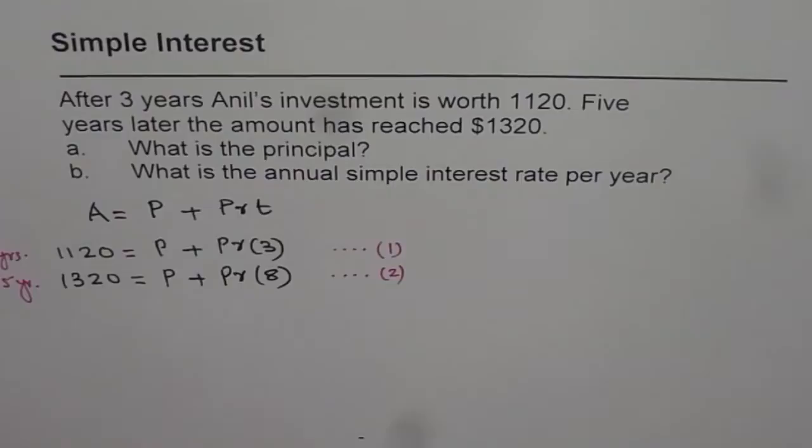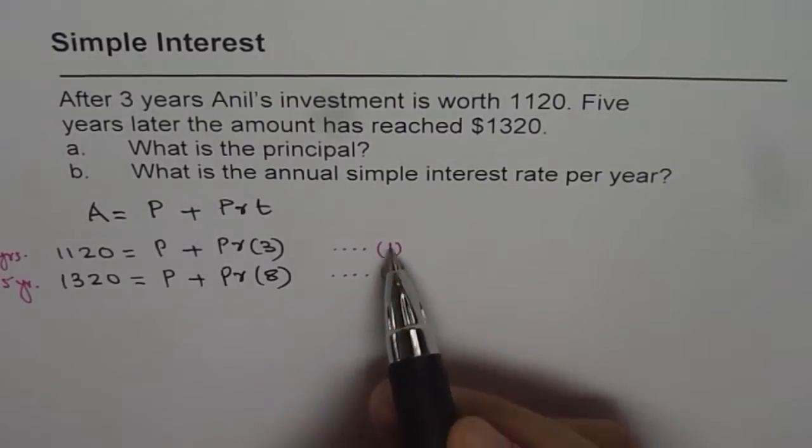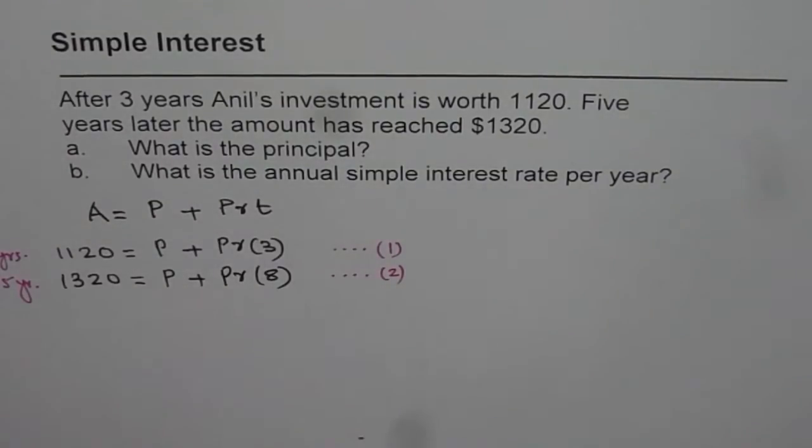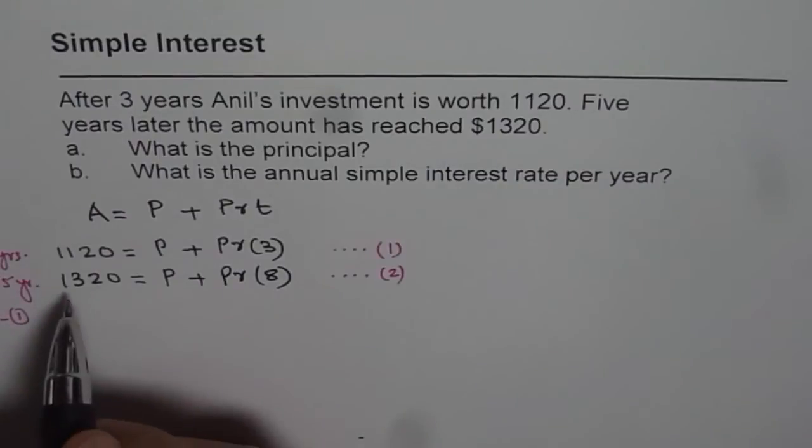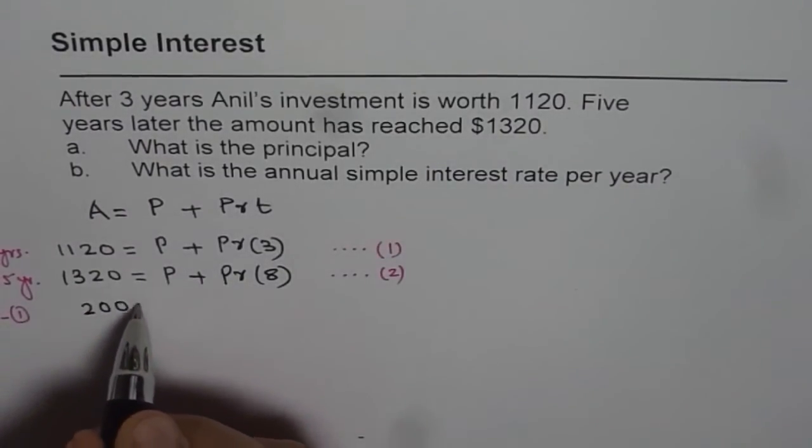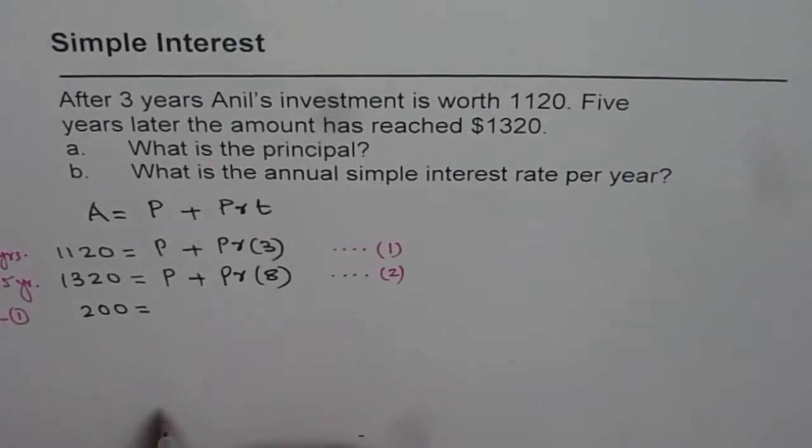Now it's like two linear equations with two variables P and R. So we can solve. So let's do equation two minus equation one. So what I'm trying to do now is equation two minus equation one. So what do we get? We get 1320 minus 1120, that is 200 equals to P minus P is zero.